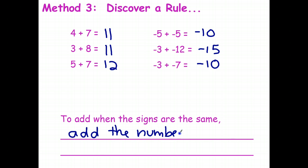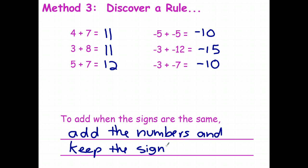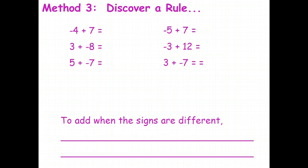Add the numbers and keep the same sign. So if you're adding two amounts of money together you get more money; if you're adding two debts together you get a bigger debt. To add when the signs are the same: add the numbers and keep the sign.